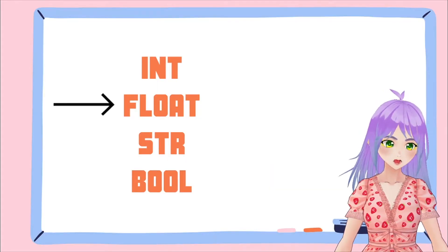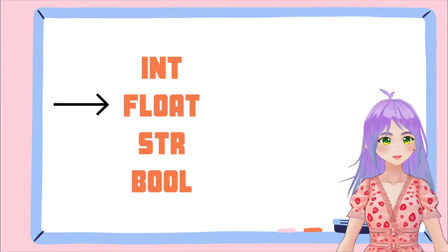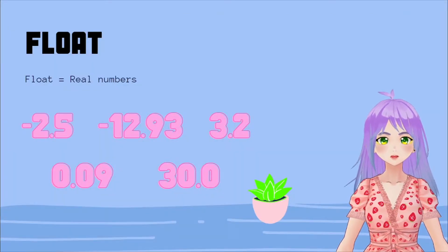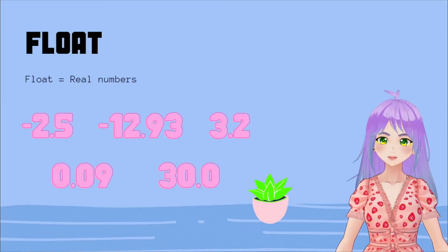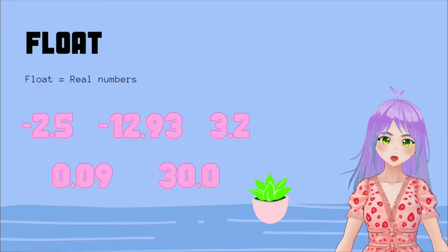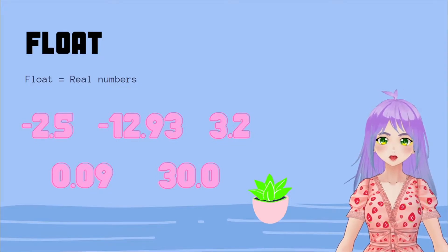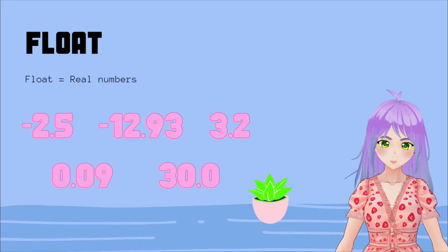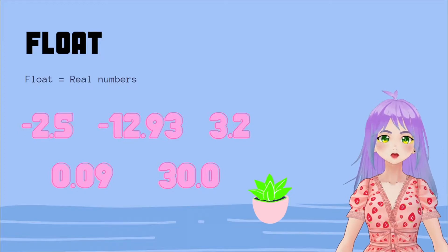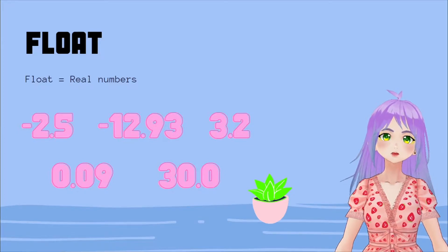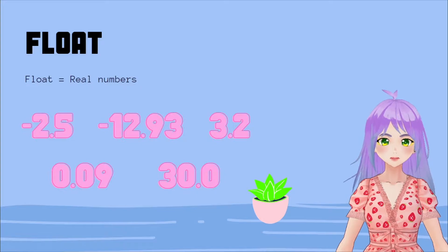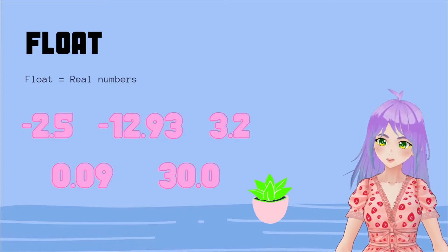The second data type I want to talk to you about is float. Float are real numbers, meaning the ones that have this decimal point with them. For example, minus 2.5, minus 12.93, 3.2, 0.09, or 30.0. And even if after the decimal point there is a zero, it is considered a float. That's why 30.0 is a float number.